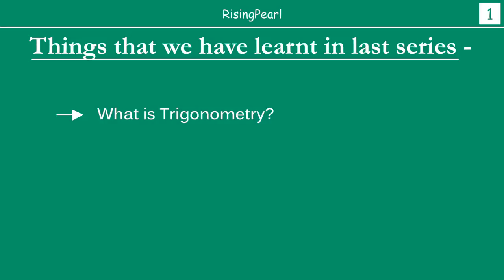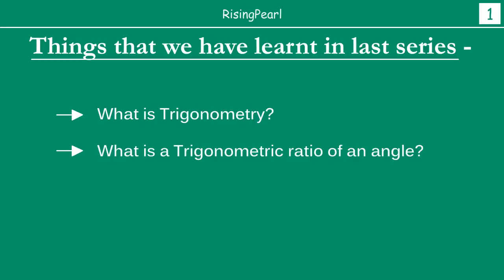We learned about what is trigonometry. We learned about what is meant by trigonometric ratios of an angle. We know there are six trigonometric ratios, and whenever we talk about trigonometric ratios, we talk always about trigonometric ratios of a particular angle in a right triangle.